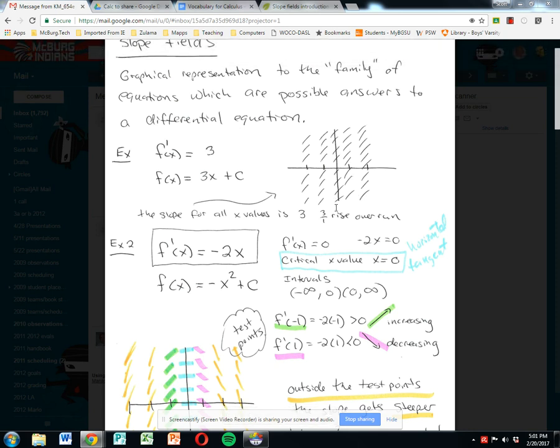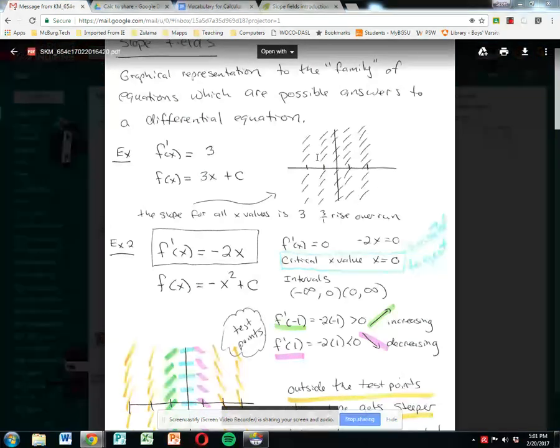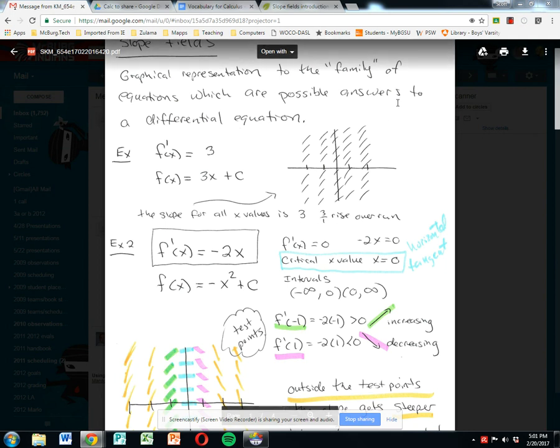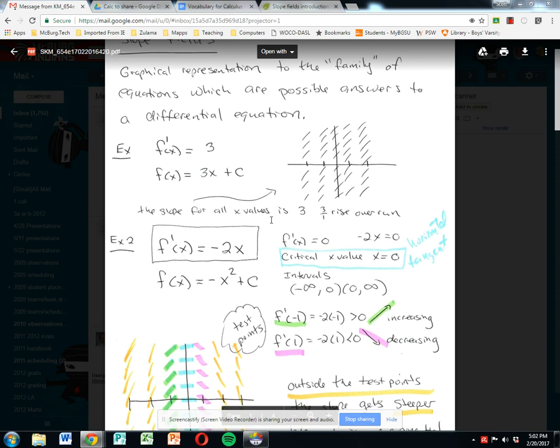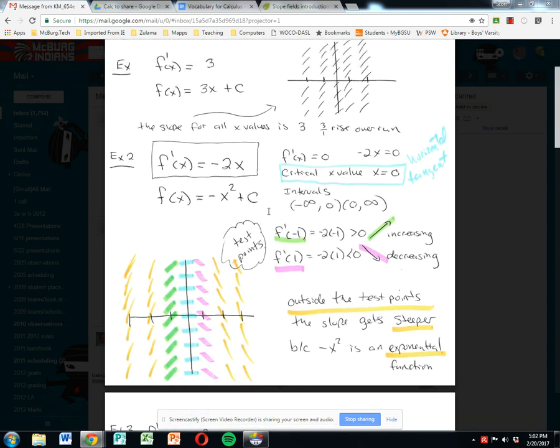It means the slope is always 3 everywhere. So 3 over 1 for every x value and every y value, the slope is 3 over 1. Basically, if we drew any graph through here, it would just be a linear equation of slope 3 over 1. Let's look at something maybe a little more interesting.